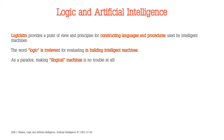Logicism is a sort of process which can drive the human being and the thinking in different phases, strictly connected to each other, and the final result is very close to the premises, to the initial part. It is a sort of path, a sort of sequence, step by step, which ensures that our discussion or behavior is rational. Logicism provides a point of view and principle for constructing languages and procedures used by intelligence machines.